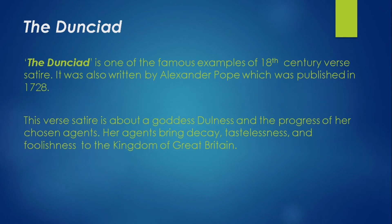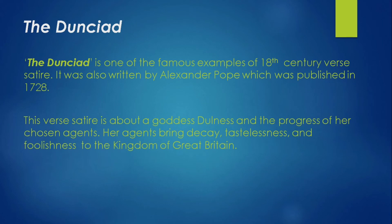The Dunciad is one of the famous examples of 18th century verse satire. It was also written by Alexander Pope and published in 1728. This verse satire is about a goddess called Dullness and the progress of her chosen agents. The goddess Dullness hires agents who bring decay, tastelessness, and foolishness to the kingdom of Great Britain. So The Dunciad is a satire on the publication houses and writers of that time.